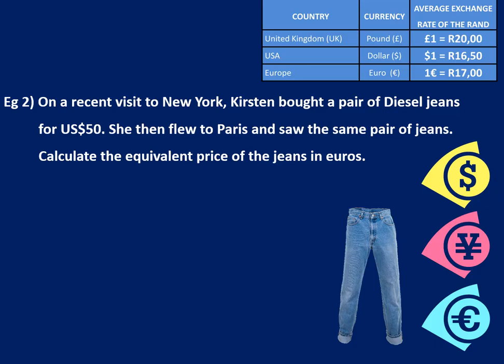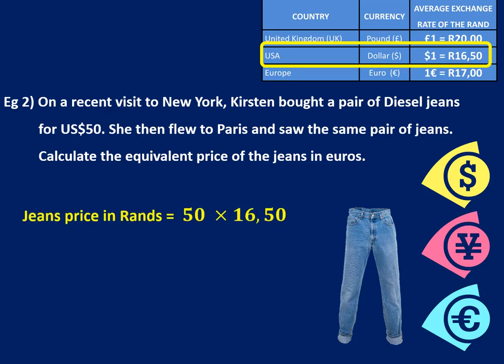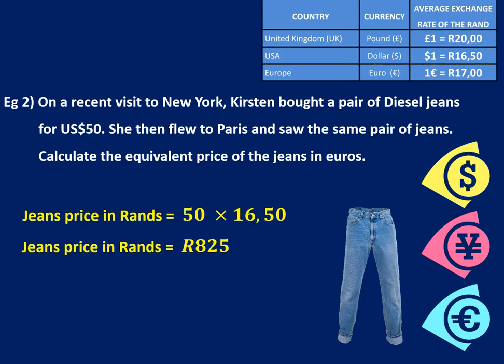If we know it's going to cost 50 US dollars, then for every dollar I'm going to pay 16 rand 50. So to get the price in rand, we're going to have to multiply 16 rand 50 by 50. Because for every one dollar I'm going to pay 16 rand 50, so for 50 dollars I'm going to go 50 times 16 rand 50. So the jeans price in rands will be approximately 825 rand.